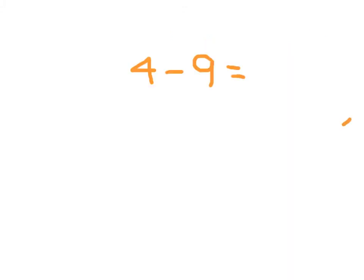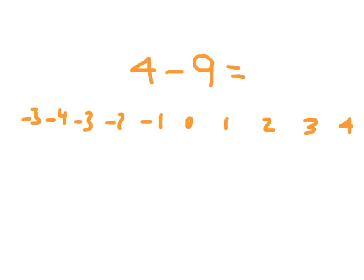Starting at 4, we go down — or to the left — 9 places: 3, 2, 1, 0, negative 1, negative 2, negative 3, negative 4, and negative 5. That's 9 away. So 4 minus 9 is negative 5.